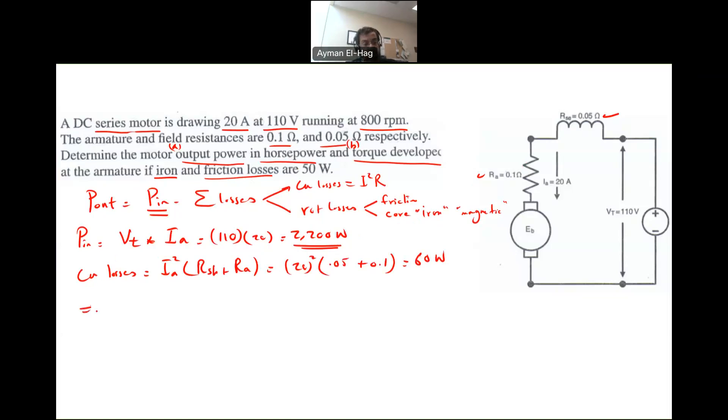So then your P out will equal to P in, which is 2,200, minus the copper loss, which is 60, minus the rotational loss, which is 50, and this will give us 2,090 watt, which is equal to 2,090 divided by 746 to convert from watt to horsepower, and this is approximately 2.8 horsepower. So this is the first requirement.